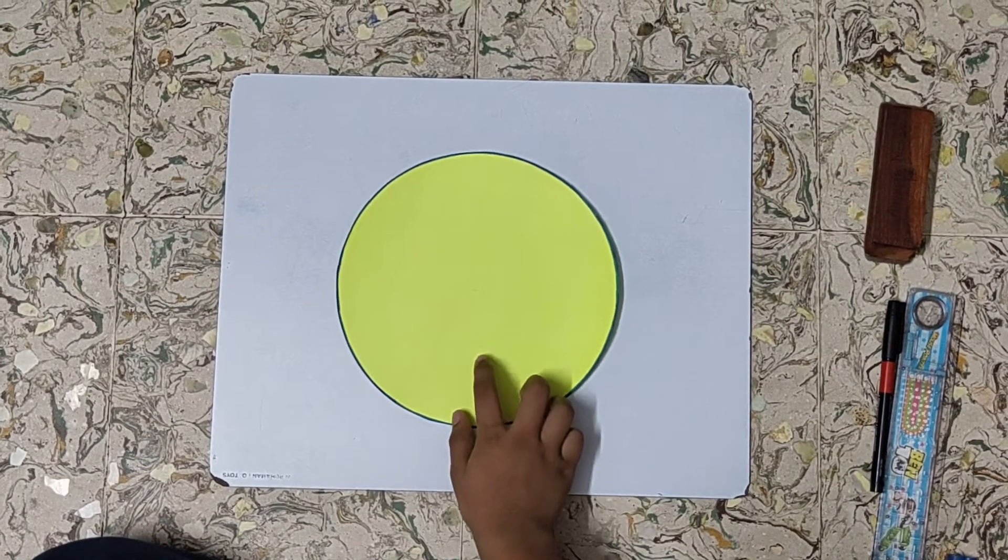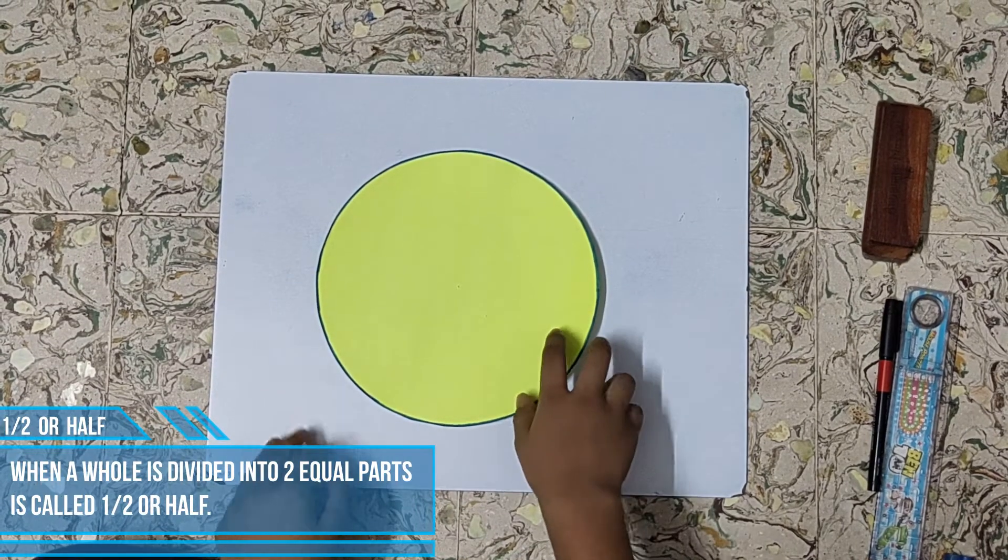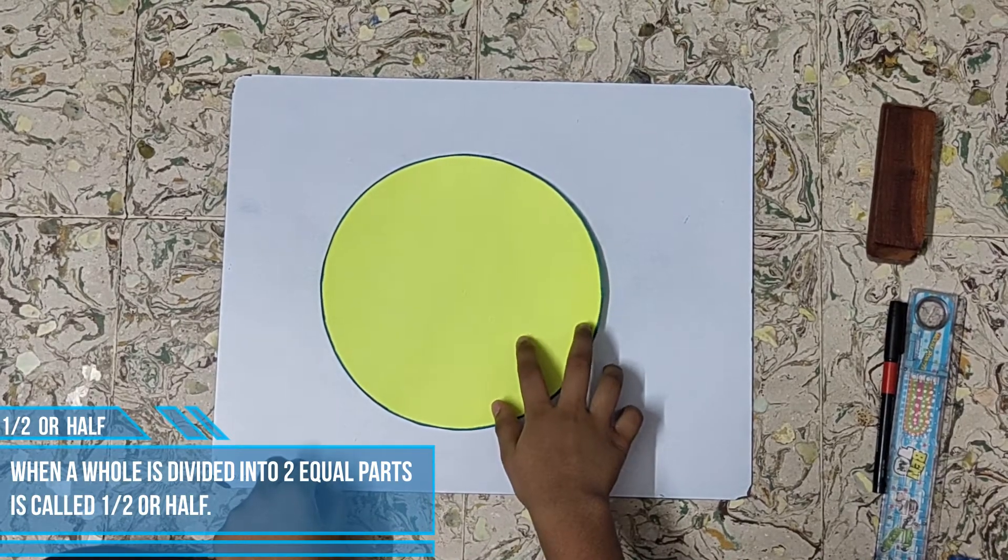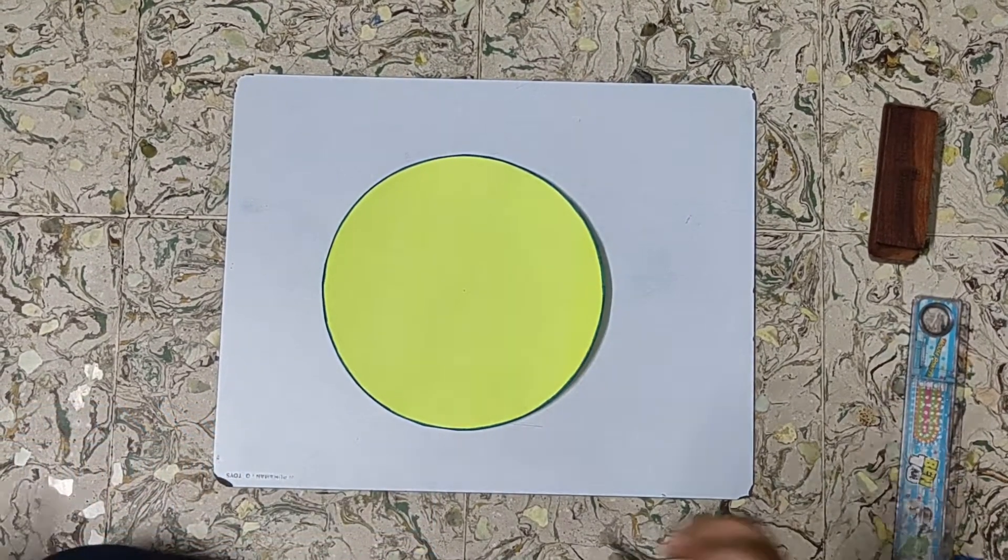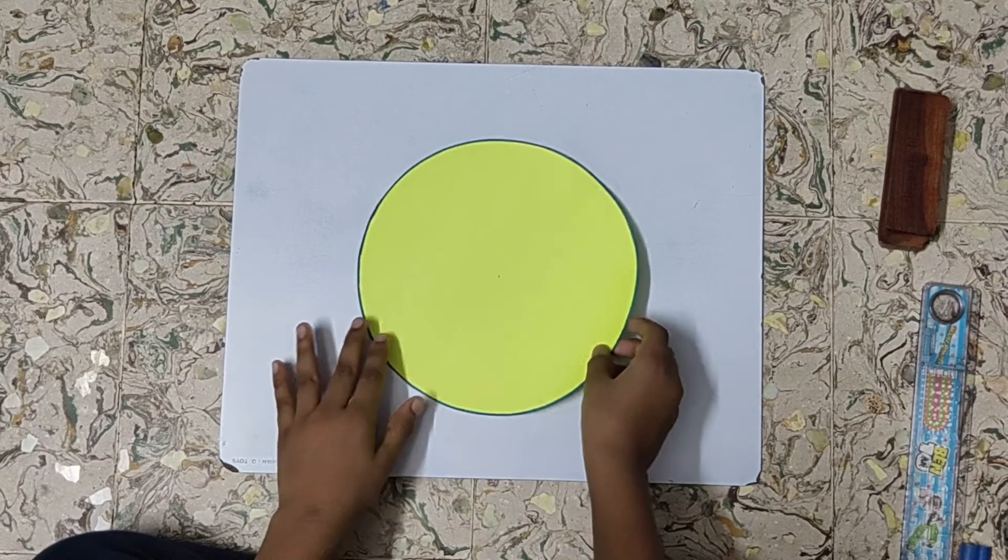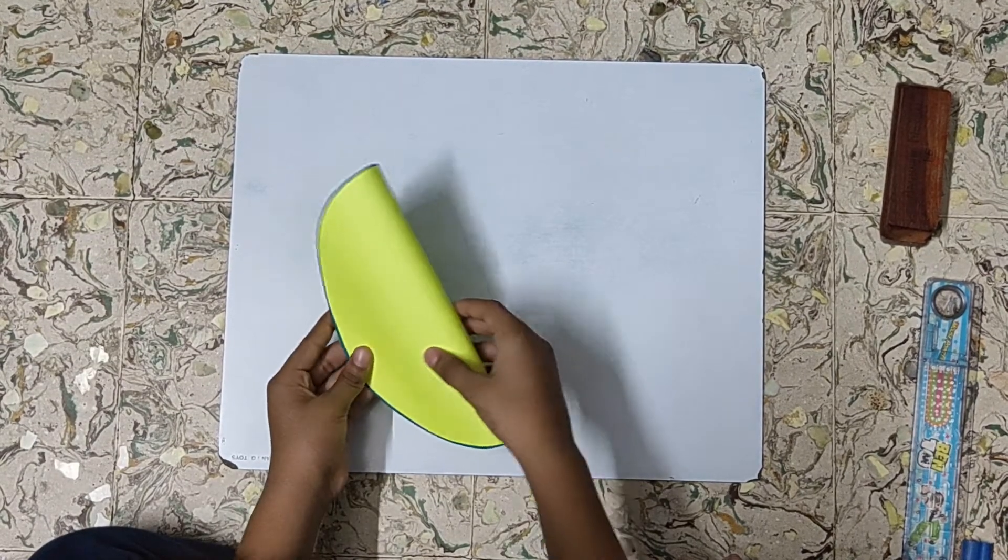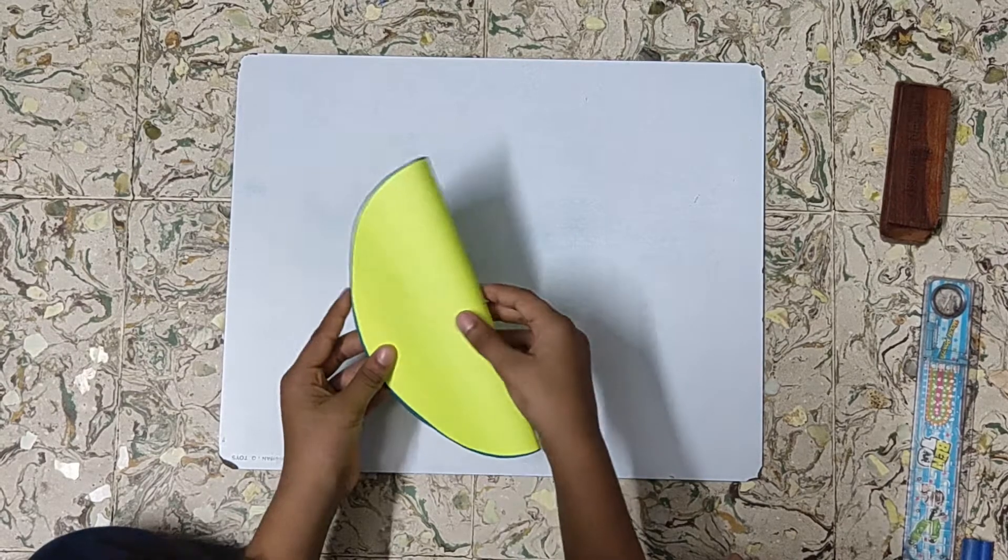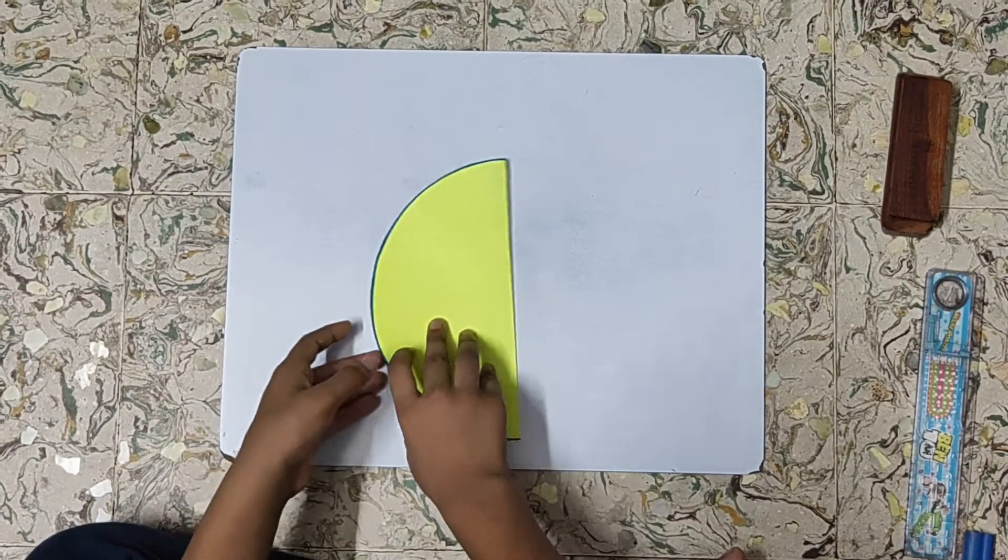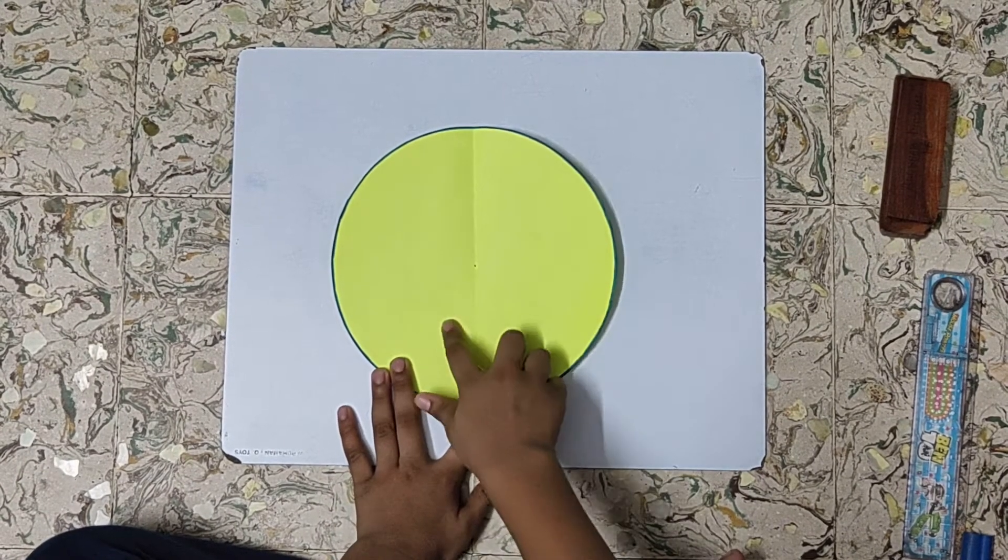First, we have one whole. 1 by 2 or half with this paper. For that, first make a center on both sides in the middle of the circle. Now, we will fold it. Make sure that the center is on the fold. Now, open it. So see, we have represented 1 by 2 or half.